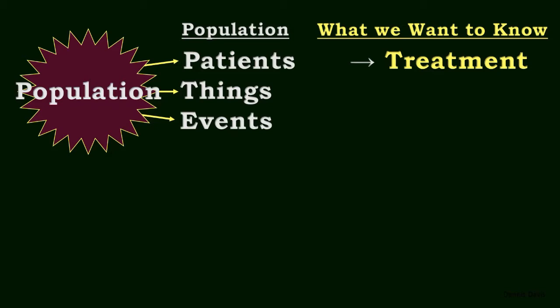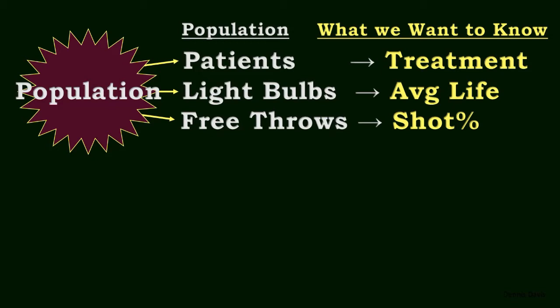For example, our population might be the set of all people with a particular disease and we want to know about the effectiveness of a treatment. Or our population might be the set of all light bulbs produced by a factory and we want to know what their average life is. Or our population might be the set of all free throws taken in an entire NBA season and we want to know the proportion of shots made.